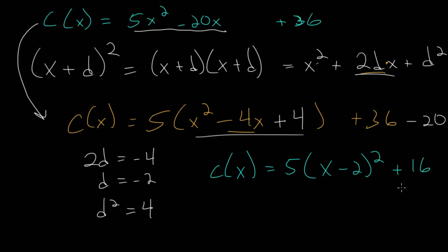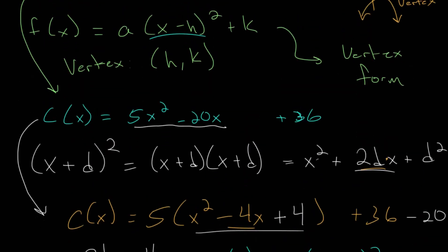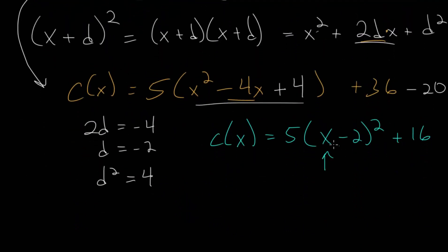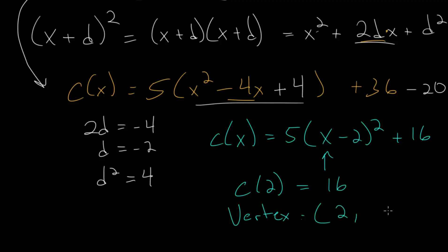Once you finish this process, I encourage you to check your work by re-multiplying all this out to see if you get back the original quadratic. Notice that we now have our vertex form: some coefficient multiplied by (x minus h) squared plus k, where (h, k) is the vertex. The x value that makes the squared expression zero is 2. If we plug in 2, the expression becomes 5 times 0, which is 0, and we get 16 for the cost. So our vertex is at x equals 2 and y equals 16, and since this is an upward-facing parabola, the vertex is the minimum value.